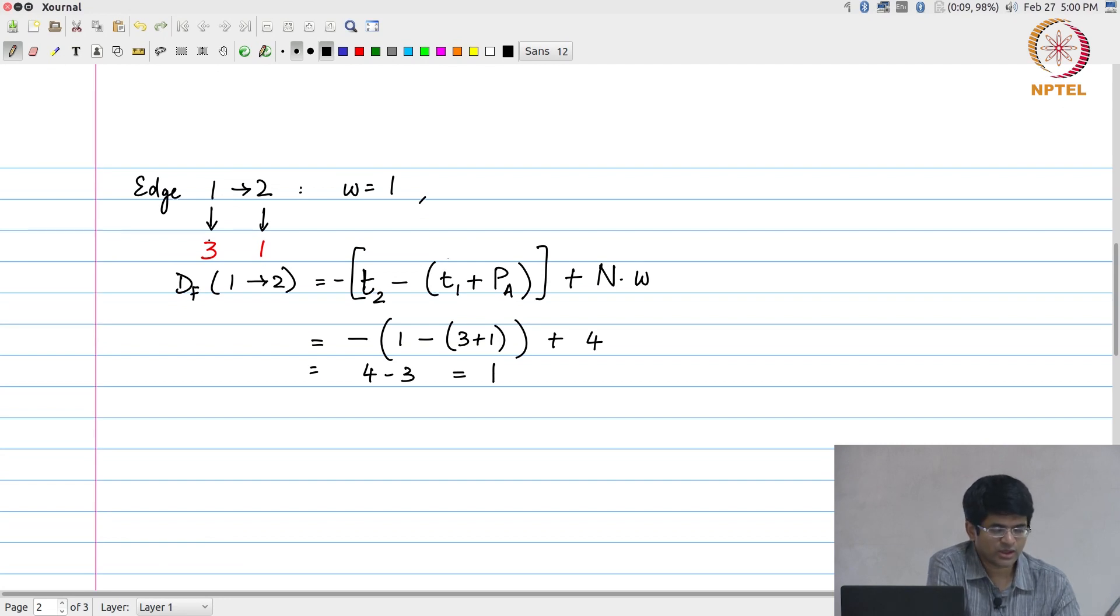I wrote it out in this fashion so that it becomes clear how I arrived at it. This t2 is the time when 2 is scheduled, t1 is the time when 1 is scheduled, t1 plus pa is the time when 1 completes and therefore its output is ready.